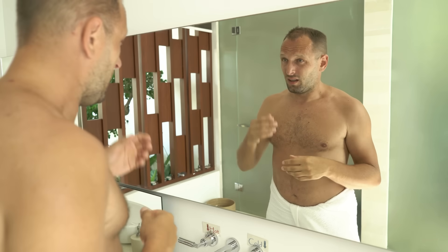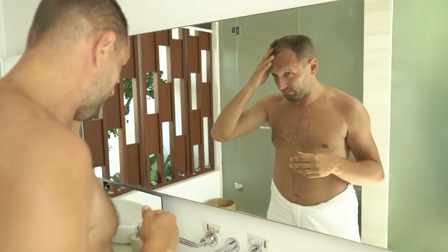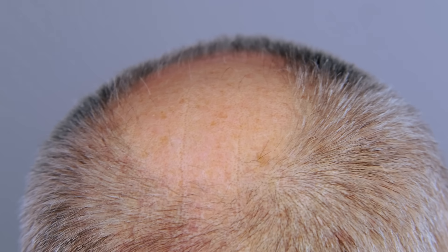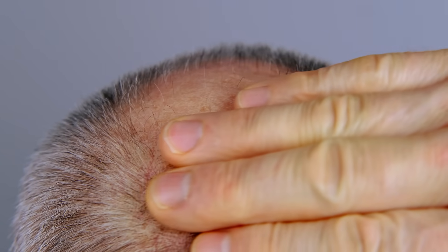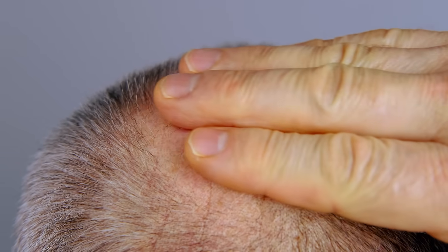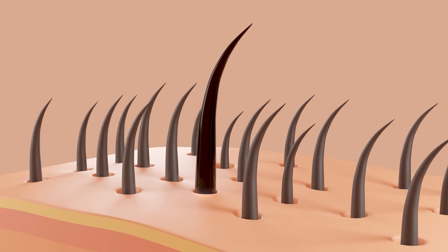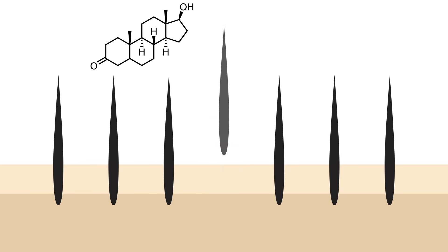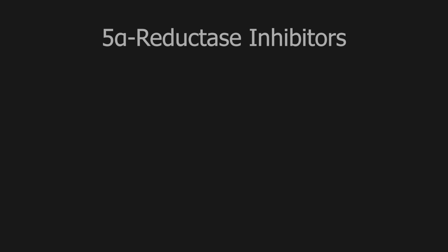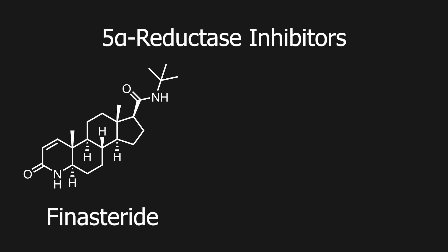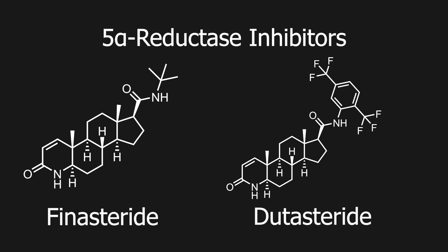Minoxidil on its own is not capable of completely stopping or reversing androgenetic alopecia, aka pattern hair loss that causes receding hairlines in men and some women. This is because minoxidil only strengthens and improves the hair through a yet unknown mechanism while hair loss is due to the effect of dihydrotestosterone, aka DHT, on the hair follicles. To prevent pattern hair loss the only working medications are 5-alpha reductase inhibitors such as finasteride or sometimes the stronger dutasteride.